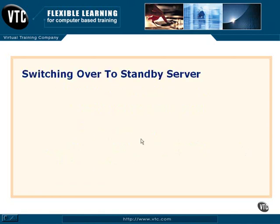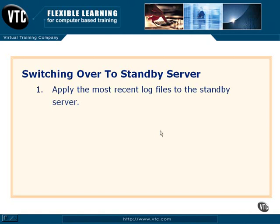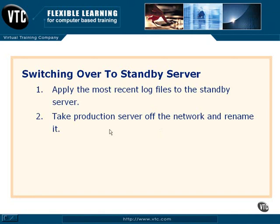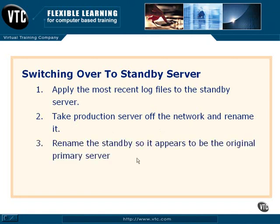What happens when we have a failure on our source or primary server? To get the standby server up and running, we're going to go to the source server, back up the most recent log file, take it to the standby server and apply it with recovery. Then we'll take the production server off the network and rename it, because we don't want anybody accidentally putting it back on the network with that old name. Then we go to the standby server and rename it to the name of the original production server, so on the network it appears to be the original primary server. Then verify that people can hit it, repair the problem on the original primary server, configure it as a standby, and begin to log ship back the other way.